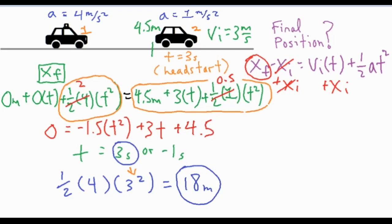To sum up: to solve a problem like this, find all the new values for your second car — where it starts (the delta x = 4.5 m) and its velocity after three seconds (3 m/s). Then restart the problem with one car at rest and the other starting at 3 m/s, 4.5 m ahead. Set both expressions equal to the final position, set the two formulas equal to each other, solve for time, then plug time back in to get the final position of 18 meters.